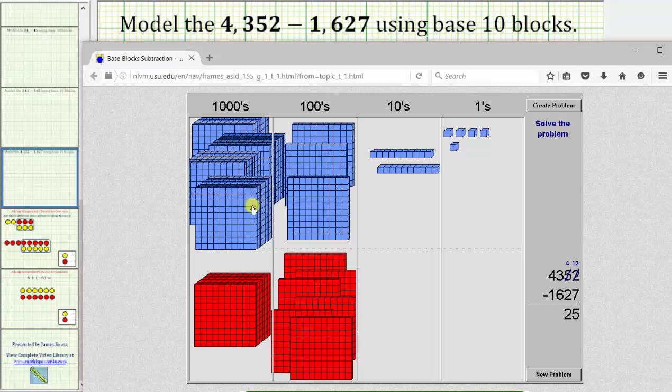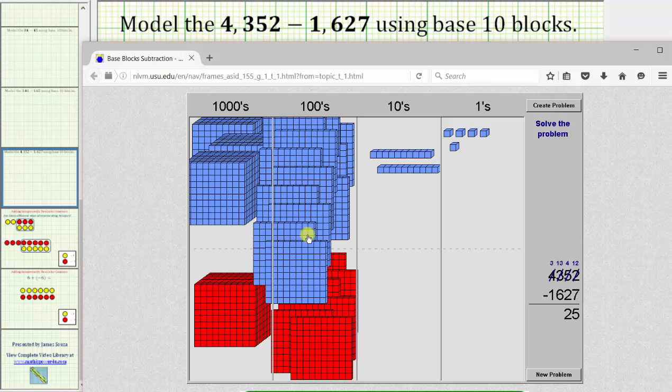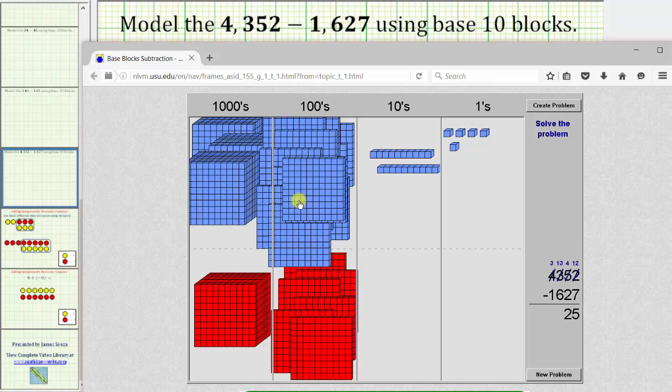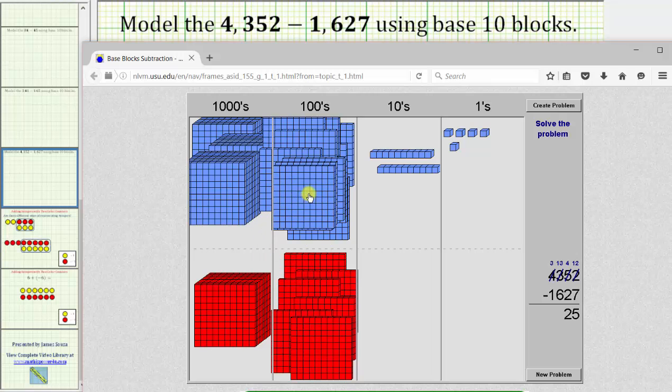We can exchange one cube for 10 flats. So we move one cube to the flats column with the hundreds place value. We now have 10 flats here, plus the three that were already there, giving us 13 flats. Now we can remove six flats from 13 flats.